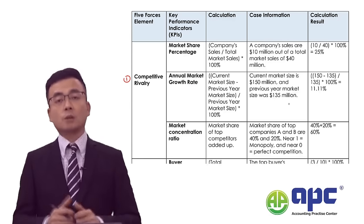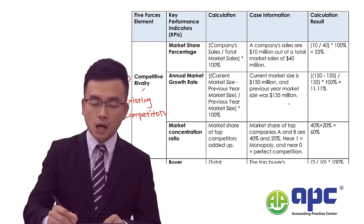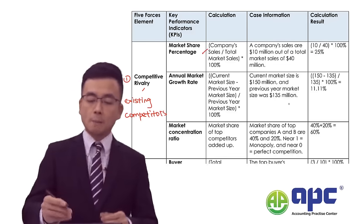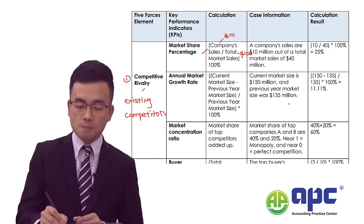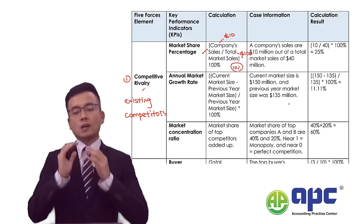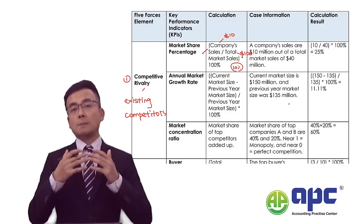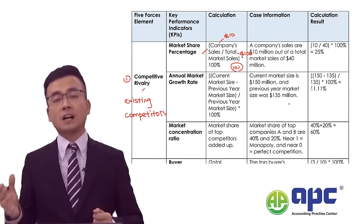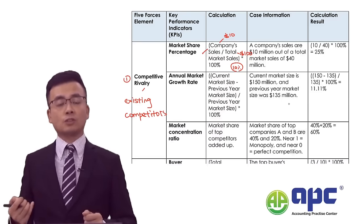Related to competitive rivalry — existing competitors in the industry — the first KPI is market share. I take my own revenue, say $10, and divide by $100 of total market revenue, giving a 10% market share. Watch out: if that percentage is too high — usually more than 40% — you may be accused of being in a monopoly position. In most jurisdictions, if more than 35%, you may be punished by laws and regulations regarding monopoly.